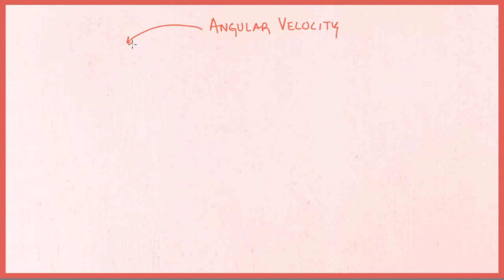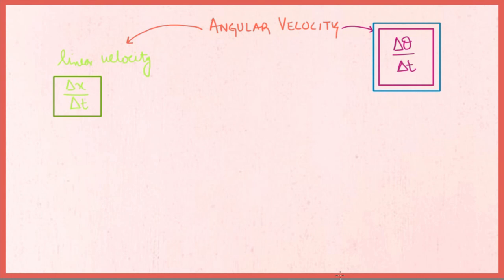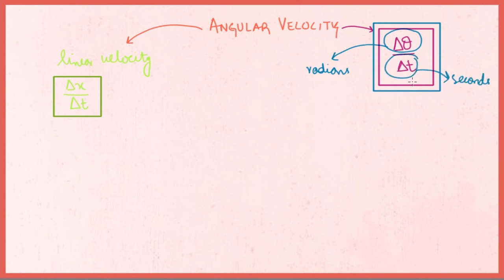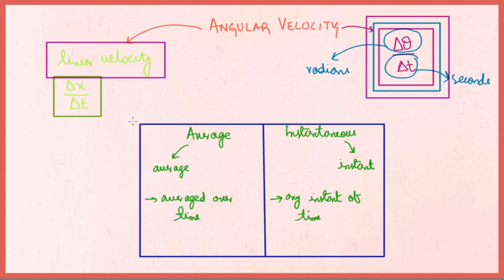To memorize the concept of angular velocity, always remember the analogy of linear velocity — linear velocity is the rate of change of displacement, and angular velocity is the rate of change of angular displacement. To memorize the units, remember the formula delta theta over delta t, where theta is the angle measured in radians and time in seconds, so the unit is radians per second. To remember the difference between average and instantaneous angular velocity, keep in mind that average angular velocity is angular velocity averaged over time, while instantaneous angular velocity is angular velocity at any particular instant.